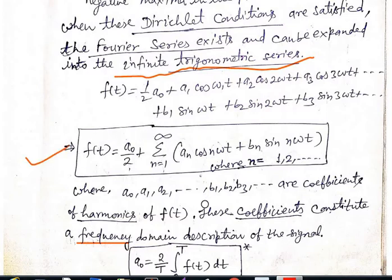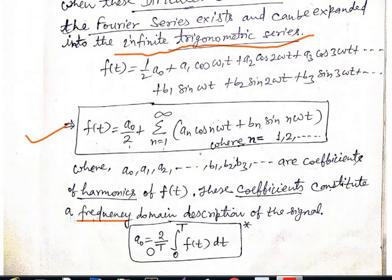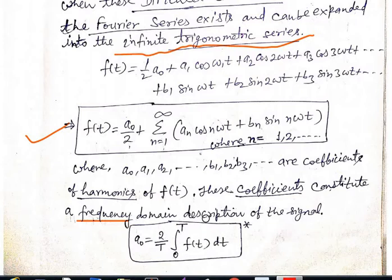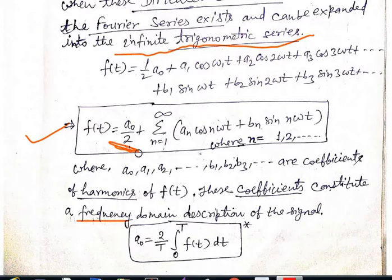Any infinite trigonometric series can be written like this, and now we have to find the coefficient values — that is frequency domain analysis. a₀ can be written as (2/T) times the integration of f(t) over one time period 0 to T. So a₀/2 equals the integration of f(t) over the time period T divided by T, which is the average value — the DC component.